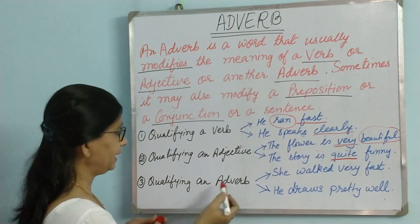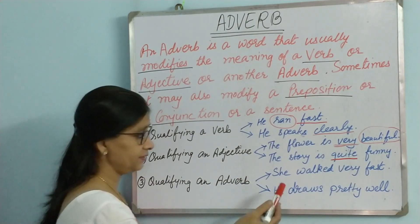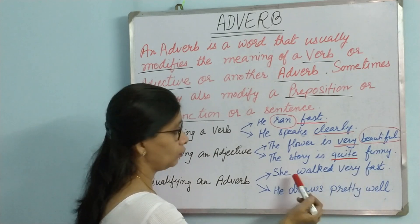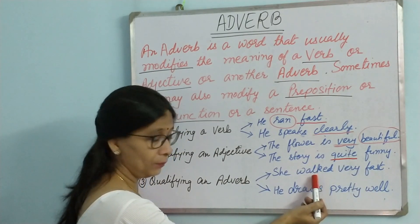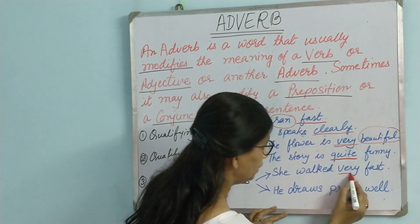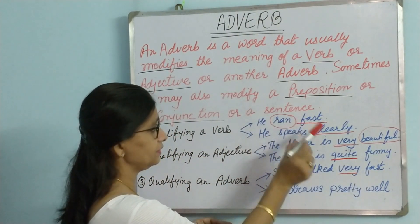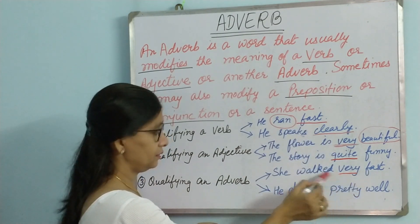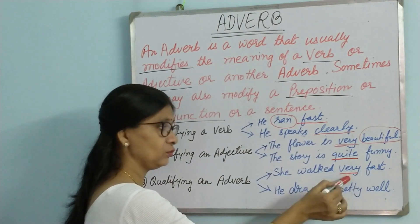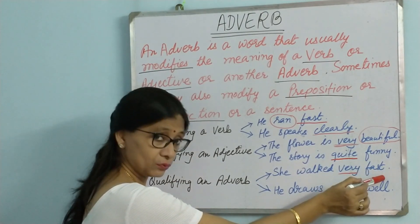Next, qualifying an adverb — an adverb can qualify another adverb. For example, 'She walked very fast.' Here, 'walk' is the verb, 'fast' is an adverb, and 'very' is also an adverb. We saw earlier that 'fast' is an adverb, but here 'very' is qualifying 'fast.' Both are adverbs, so this 'very' is qualifying an adverb.